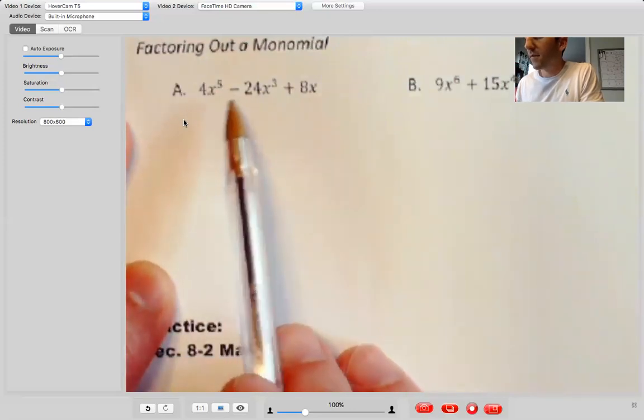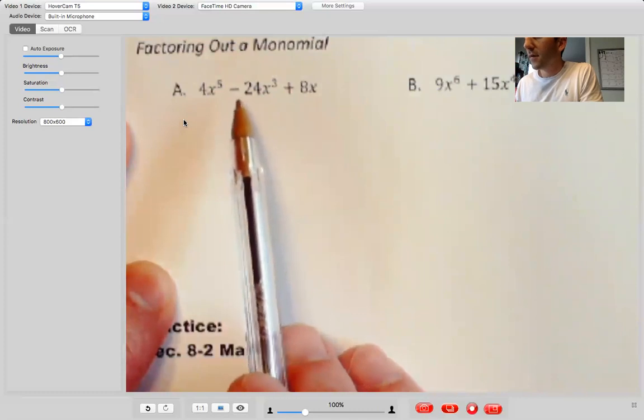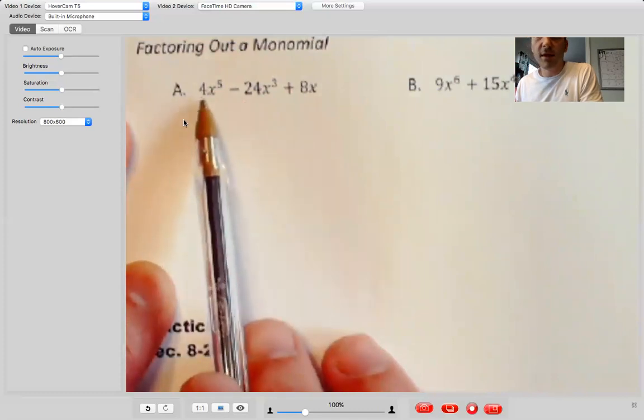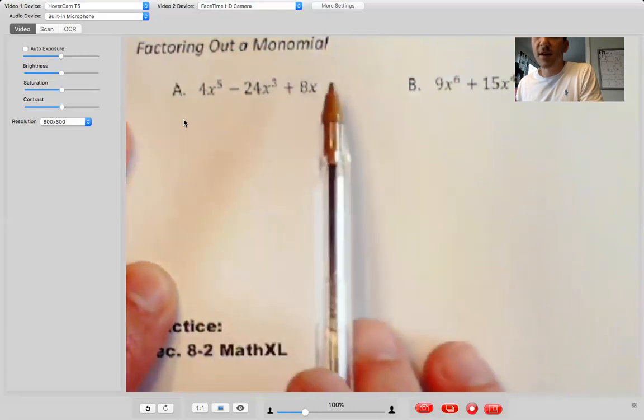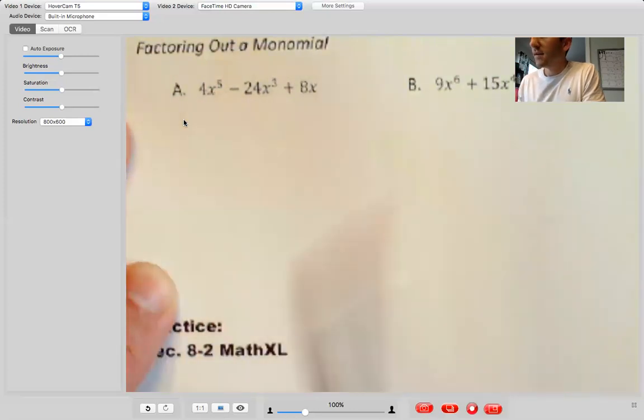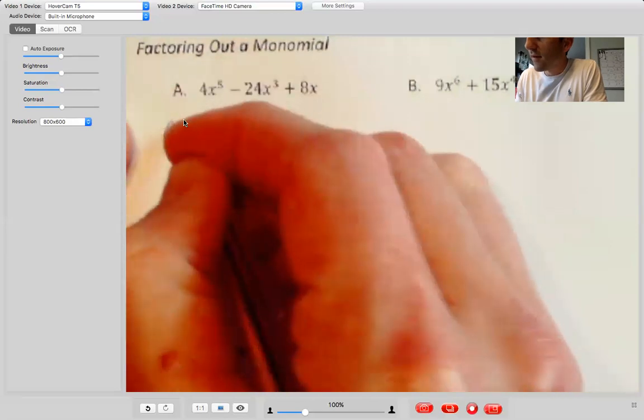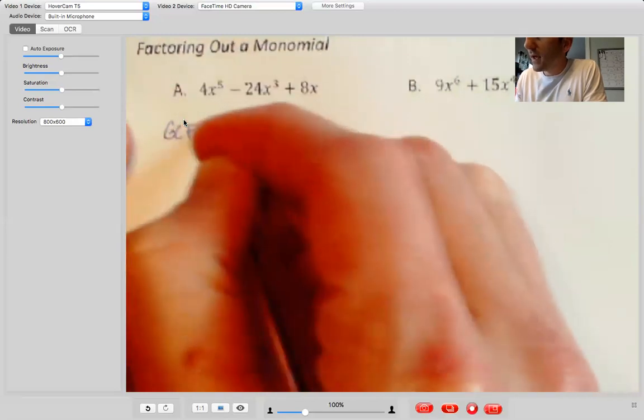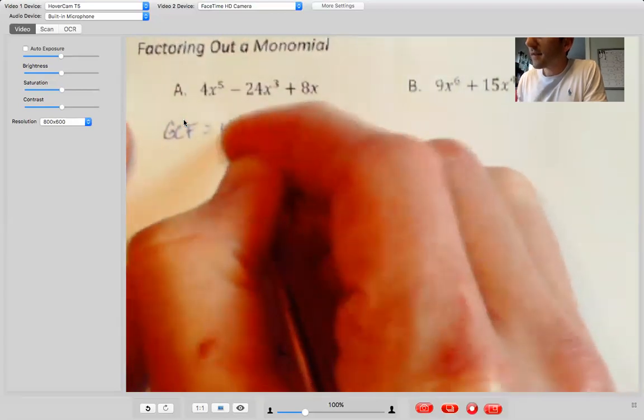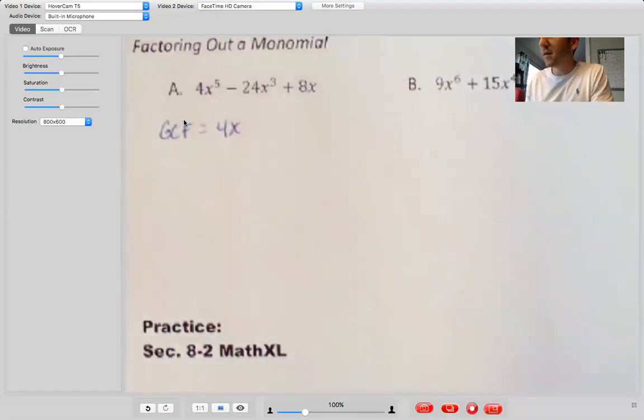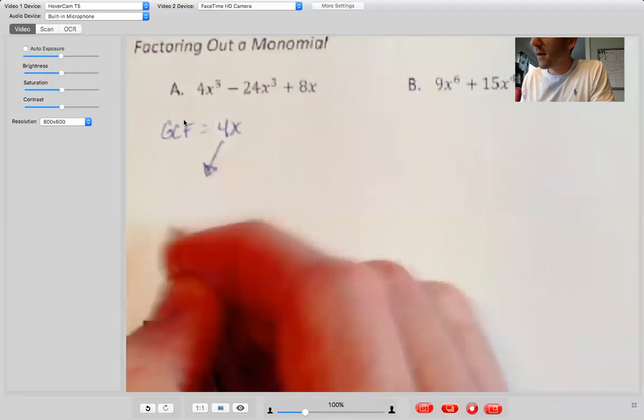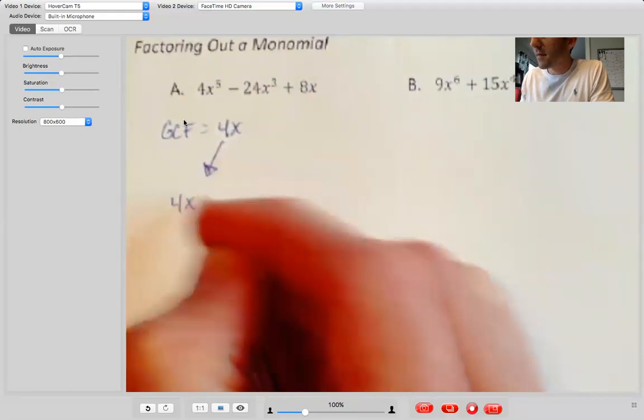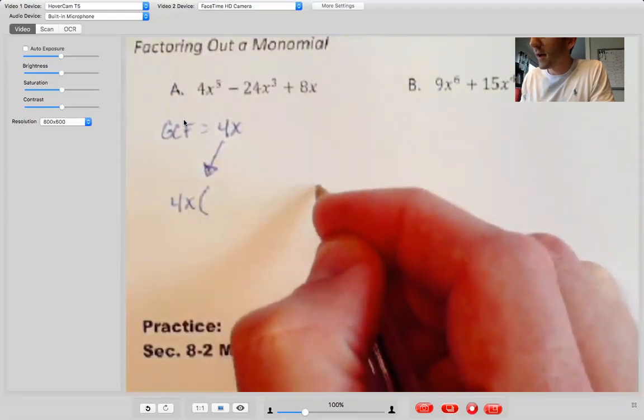Biggest thing that goes into four, negative 24 and eight is four. I know it's positive because my lead coefficient is positive. And then my lowest power of X is one. So overall GCF is equal to four X. Okay. So your GCF always is kind of the front part of your answer. So our answer is going to be in the form of four X times the quantity of something. Okay.